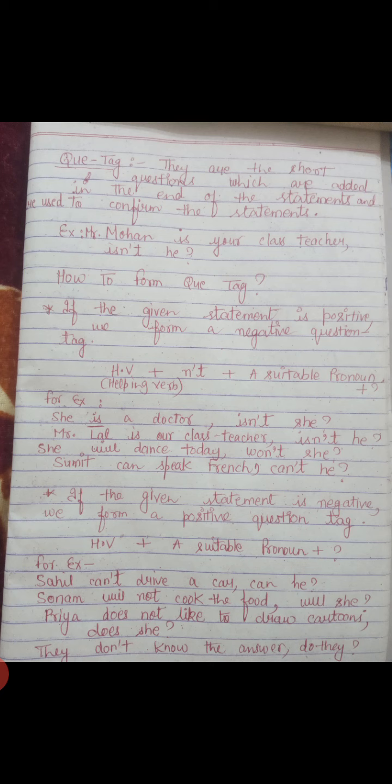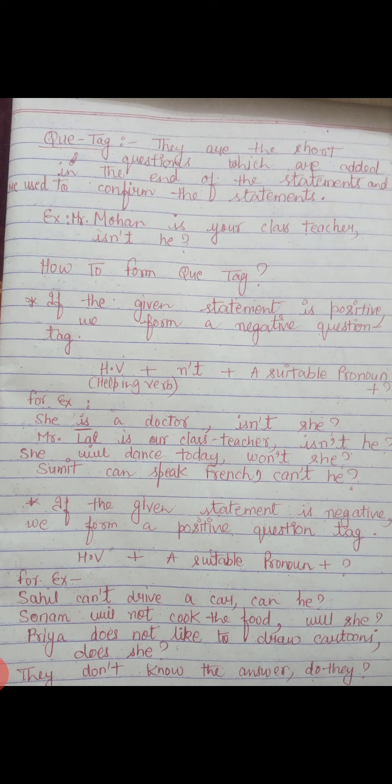Now, if the given statement is negative, we form a positive question tag. The structure is the same, but we remove the n-apostrophe-t. We still use the helping verb from the sentence and a suitable pronoun. For example: 'Sahil can't drive a car' — the helping verb is 'can', so the question tag is 'can he?'